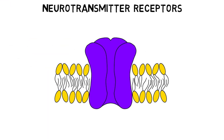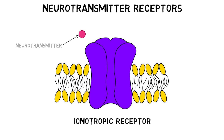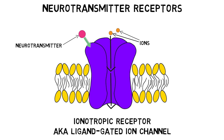There are two general types of neurotransmitter receptors. One is called an ionotropic receptor, because when a neurotransmitter binds to one of these receptors, it causes the opening of an ion channel that lets ions flow across the membrane of the neuron, potentially changing the activity of the cell. A general term for a molecule that binds to a receptor is a ligand, and because ionotropic receptors consist of an ion channel that opens in response to a ligand binding, they are also called ligand-gated ion channels.